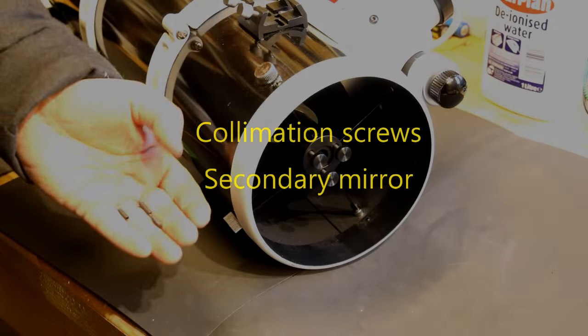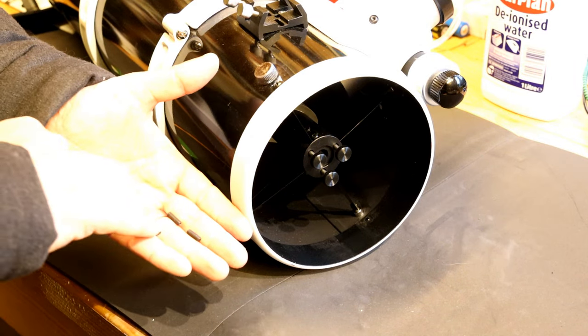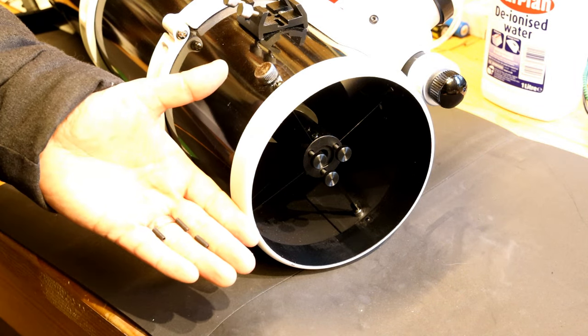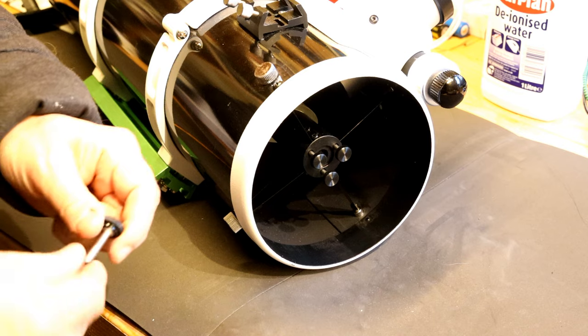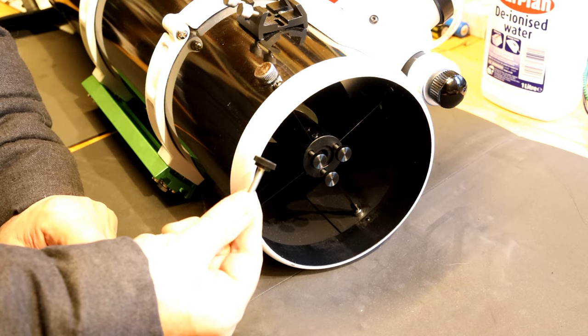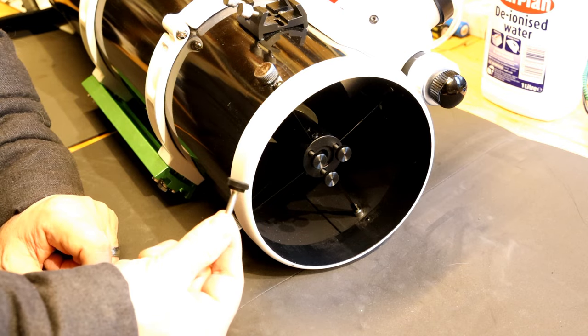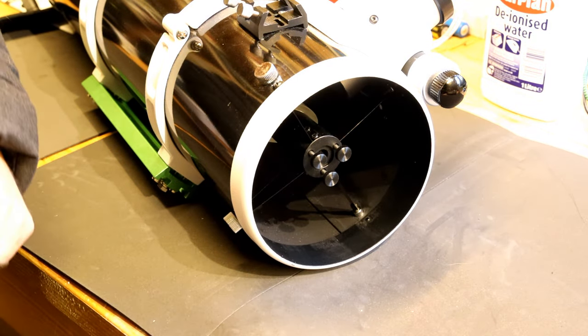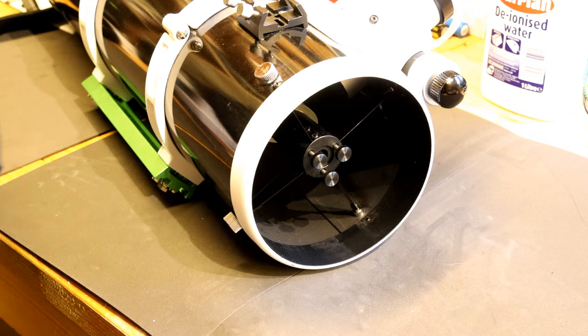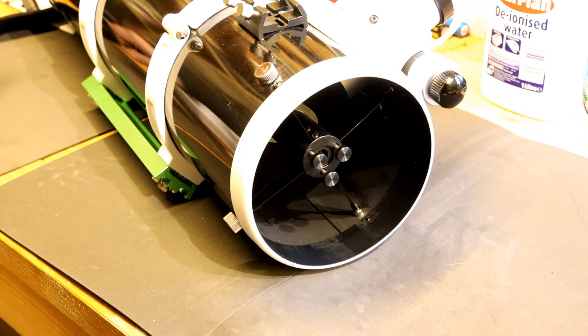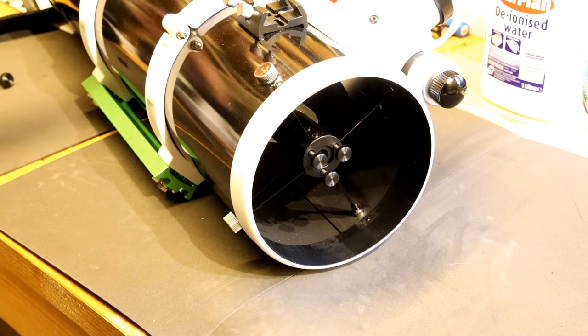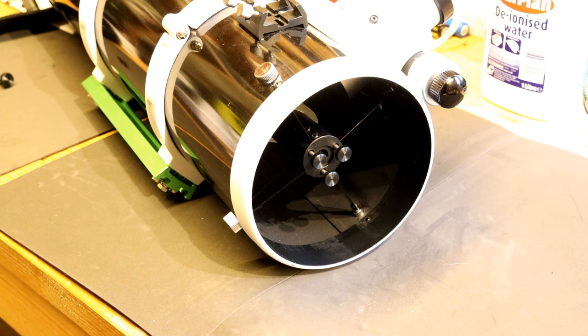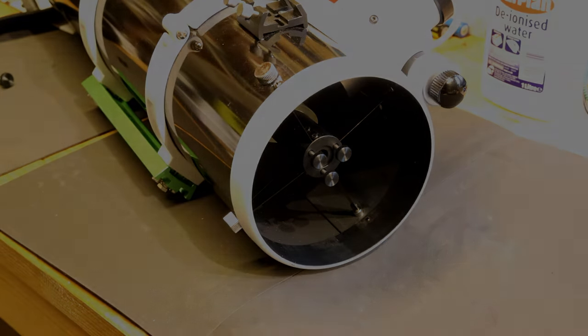For collimation, the original scope has these grub screws which I've removed and replaced with a product known as Bob's Knobs. I'll put a link in the description. They literally just replace those three grub screws and they do help make collimation a lot easier. The back of the scope for the primary mirror already has thumb screws in place, so you just end up with thumb screws front and back. As I say, it just helps make collimating the scope really easy.